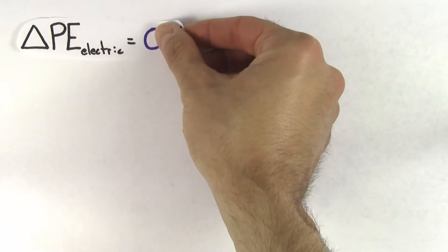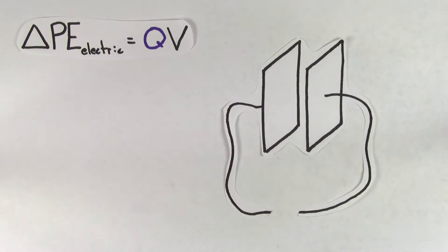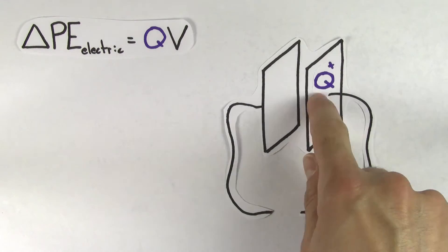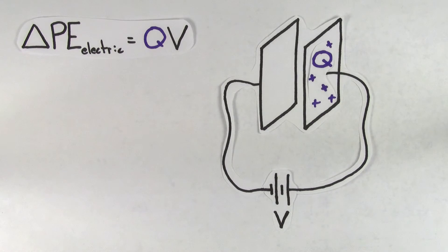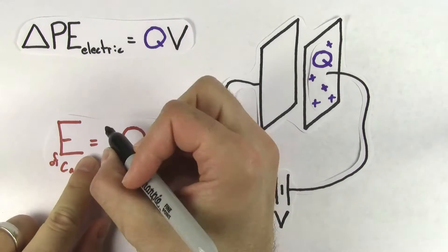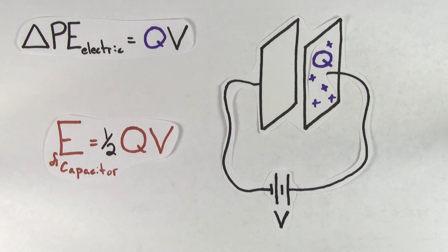Looking at this formula, what do you think the energy would be of a capacitor that's been charged up to a charge Q and a voltage V? Q times V — that's what I thought it would have been too, but it turns out the energy of a capacitor is one half Q times V.